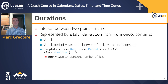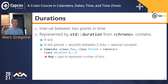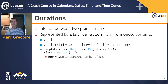Next: durations. A duration is an interval between two points in time, represented by the std::duration template from the Chrono Library. The std::duration class contains a number of ticks and a tick period — the number of seconds between two ticks — represented as a compile-time rational constant. The duration class template has two type parameters: rep, which is an integral or floating-point type used to represent a tick, and period, a compile-time rational constant for the tick period.